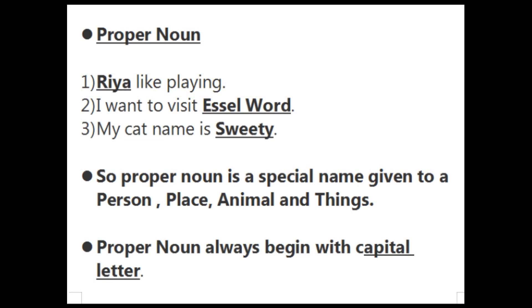First is proper noun. Let's see some sentences. First sentence: Ria likes playing. Here I highlight Ria because Ria is a girl's name — it is a specific name for a girl. Then second: I want to visit SL Word. Here I highlight SL Word because SL Word is a specific name of a place. And the third sentence: My cat's name is Sweetie. Here Sweetie is a cat's name — Sweetie is a specific name given to the cat.